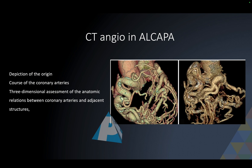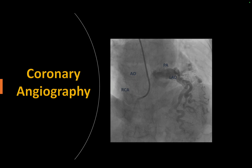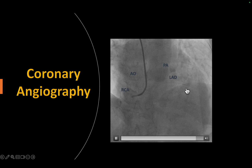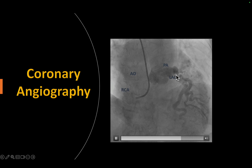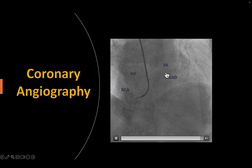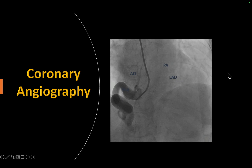CT angiography is probably the best modality to visualize the various anatomical landmarks. It gives a three-dimensional picture of coronary artery anatomy and their dilatation. Conventional coronary angiography is required in fewer patients these days. On CT angio, you see the right coronary artery filling with contrast, and from there, collaterals fill and flow back into the pulmonary artery. The right coronary artery has collaterals that connect to the left coronary artery, which drains back into the pulmonary artery.